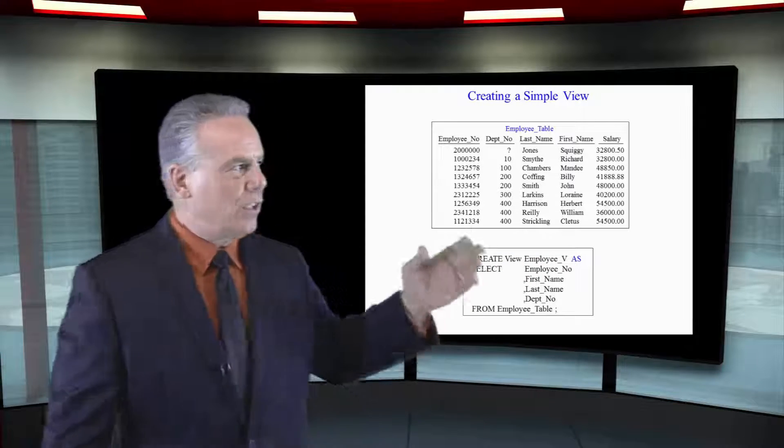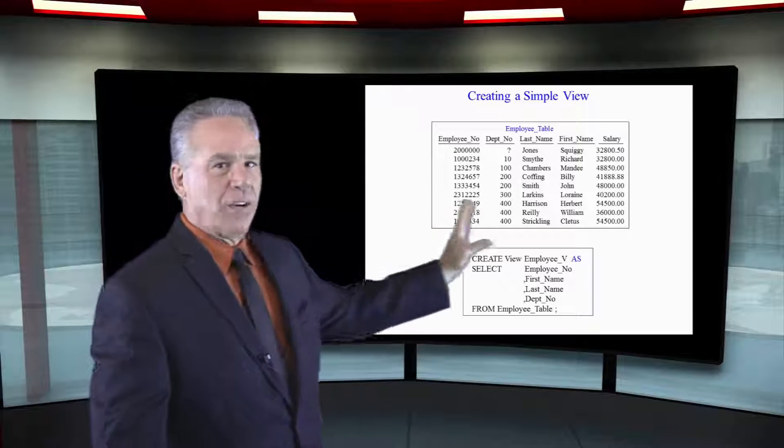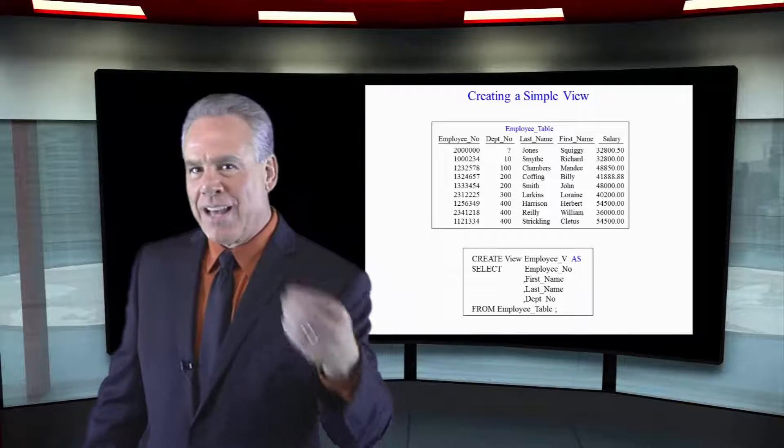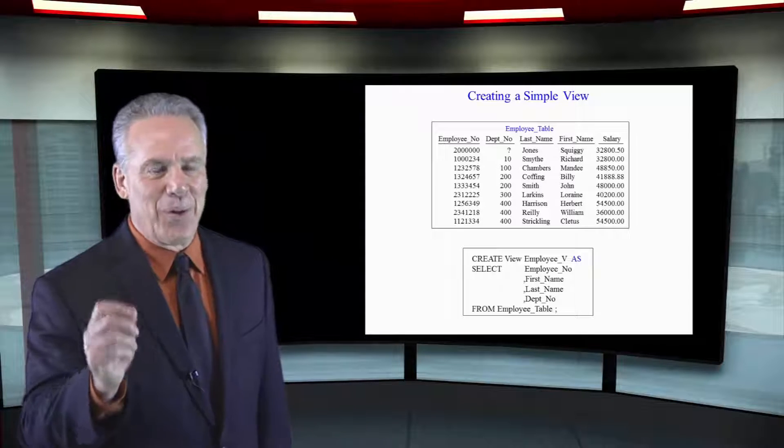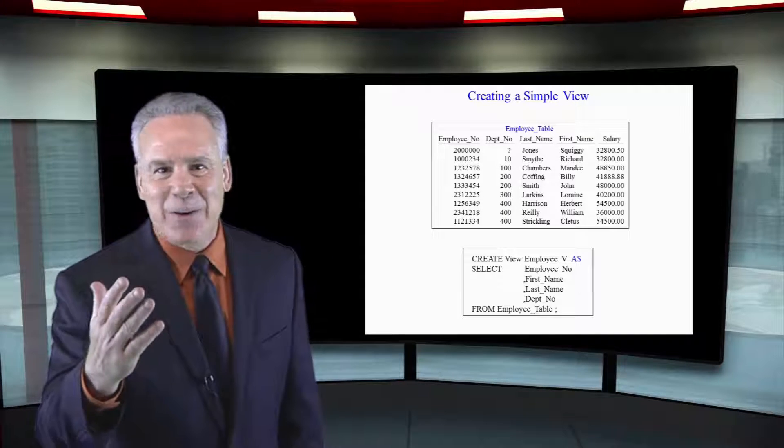Now, take a look at my actual table up here. It's got employee, department, last name, first name, and salary. What do you think the one column that every other employee wants to see? The salary, what everybody's making.